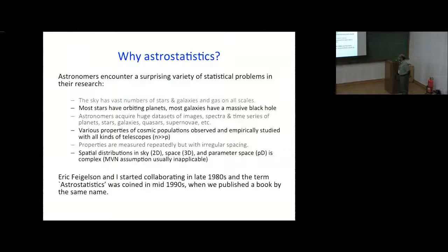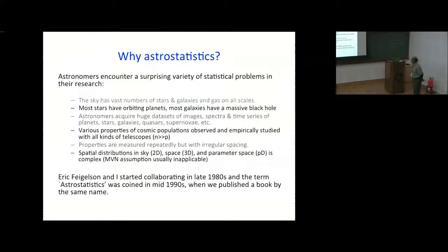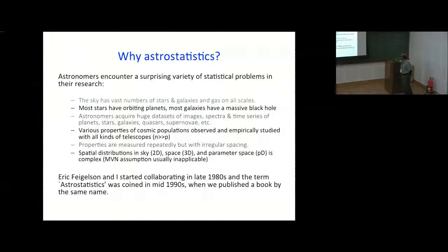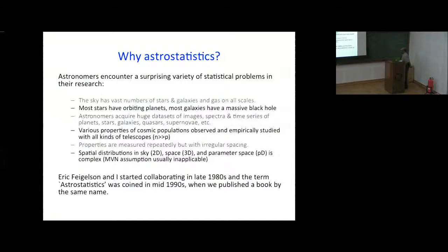There is quite a bit of spatial data in 2D, 3D, and also multi-dimensional parameter spaces. Usually in statistics we often assume multivariate normality, which doesn't hold in many cases. Eric and I started this enterprise about 25 years ago and we wrote a book with the name astro-statistics, coining that term in the 90s.